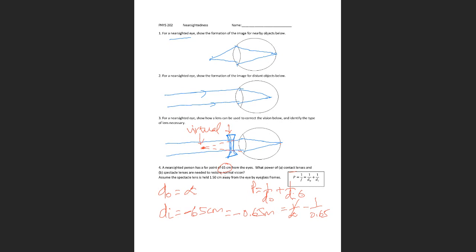The power I'm getting is negative 1.54 diopters. So for the contact lens, the power is negative 1.54 diopters. Now, how do we change this for the spectacle lens?